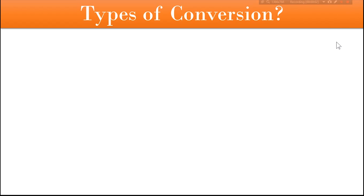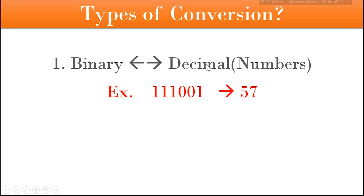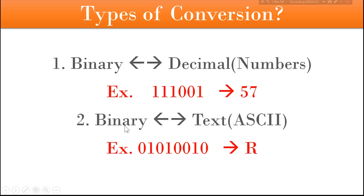So what is binary? Binary is a number which contains only zeros and ones. There are two types of binary conversion. The first is binary-decimal conversion — that is binary to numbers or numbers to binary. The second type is binary to text — that is any alphabet or sentence converted to binary or vice versa. These are the two types of conversion we are going to learn in this video.